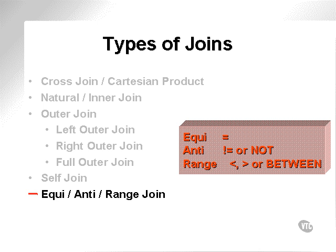Equi-joins, anti-joins, and range-joins: equi implies equals, anti implies not or negative, and range implies between, less than, or greater than. We'll go more into equi, anti, and range-joins at a later stage.